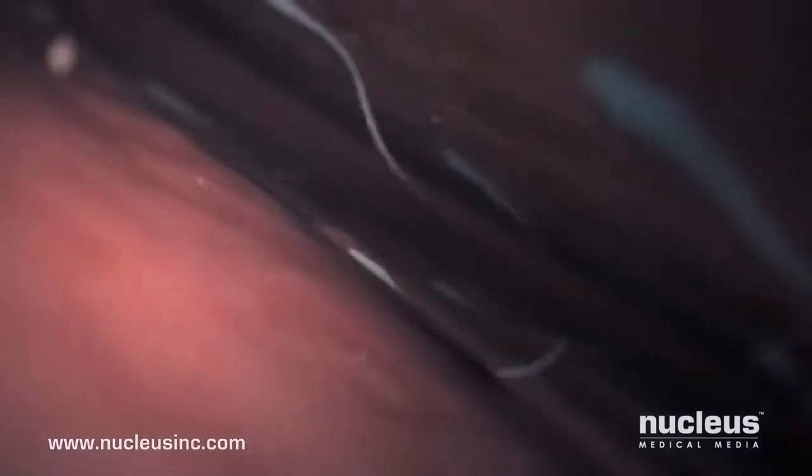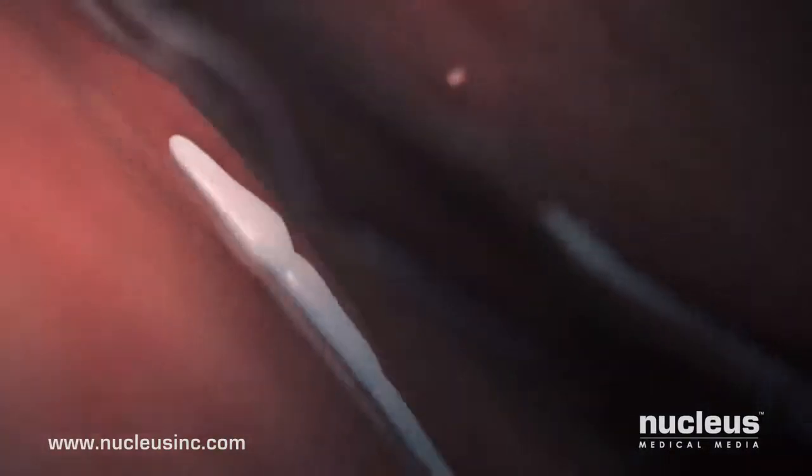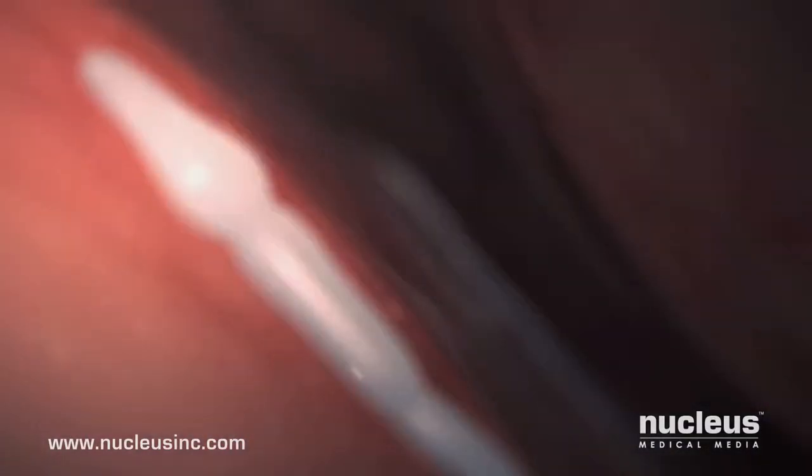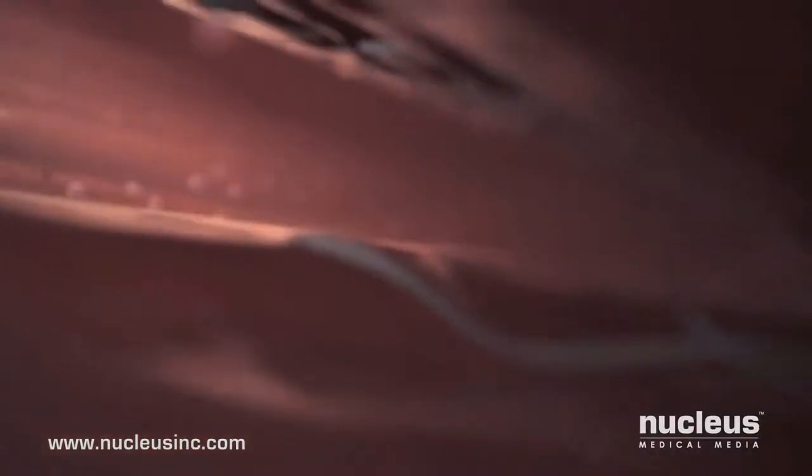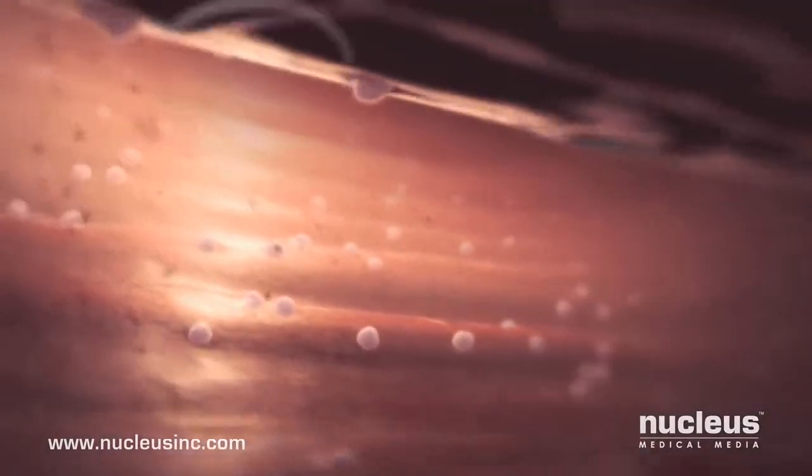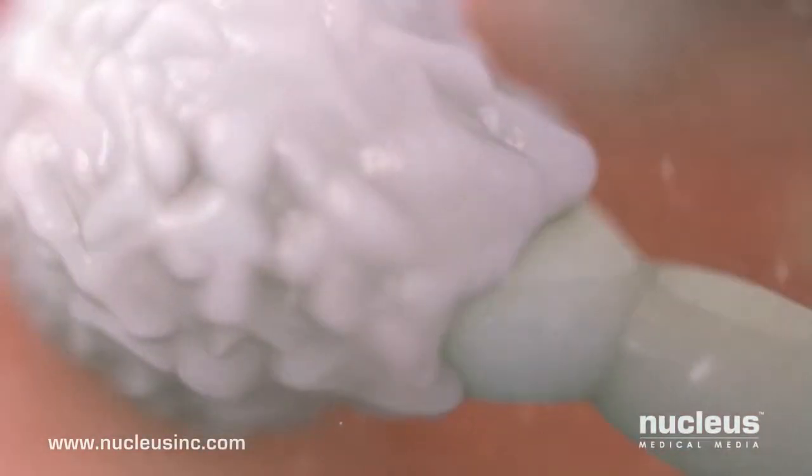Inside the uterus, muscular uterine contractions assist the sperm on their journey toward the egg. However, resident cells from the woman's immune system, mistaking the sperm for foreign invaders, destroy thousands more.